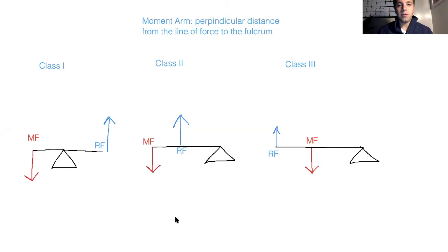So let's first review what a moment arm is. A moment arm is the perpendicular distance from the line of the force to the fulcrum.